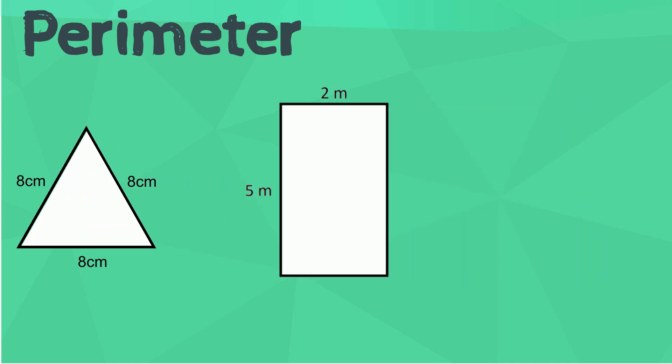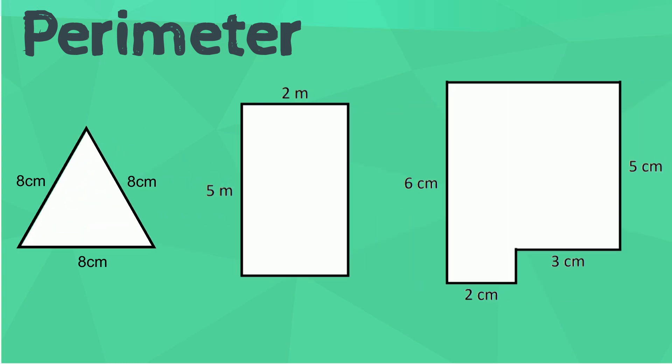The perimeter of the triangle is 24 centimeters. Pause here while you work. How did you go? Let's check the answers. The perimeter of the triangle is 24 centimeters, and the perimeter of the rectangle is 14 meters.